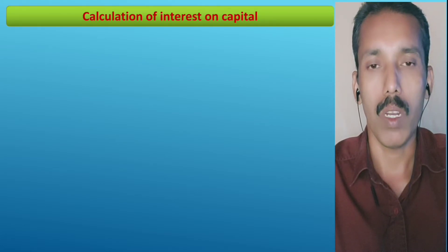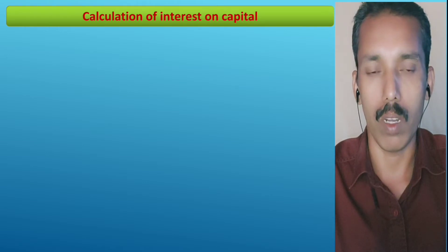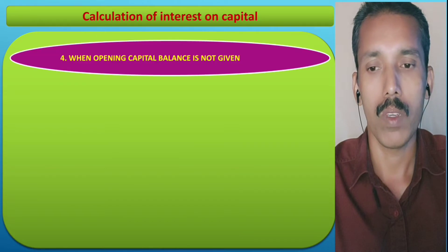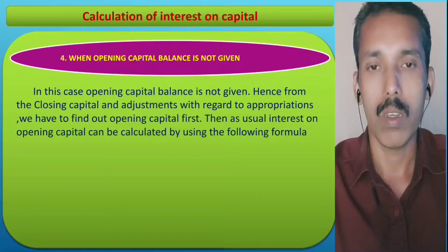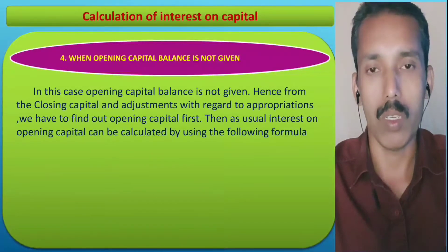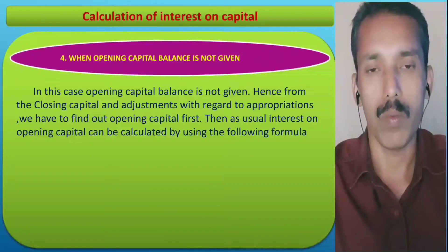When opening capital balance is not given, how will you calculate interest on capital? In this case, opening capital balance is not given. Hence, from the closing capital and adjustments relating to partners — that is, relating to appropriations — we have to find out the opening capital.